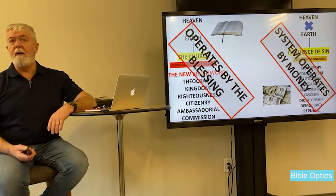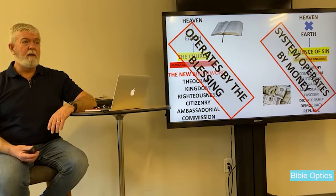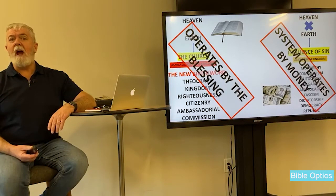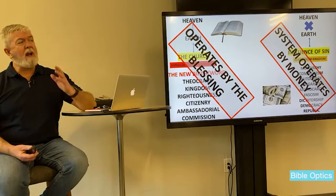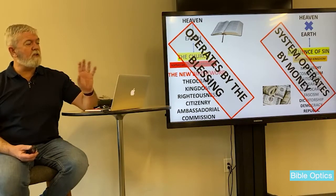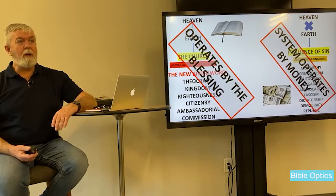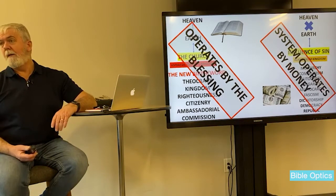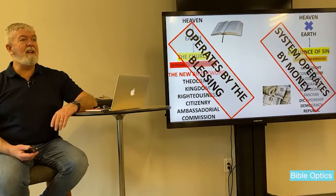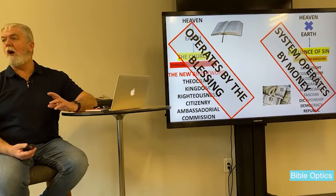When it all boils down to it, there are two systems on the planet. The one operated by God is the theocracy, and the factor that motivates and runs God's system is the blessing — that's how it works. The blessing is operated by faith, by believing that you are and that it is, trusting that God has done what He did in Jesus.